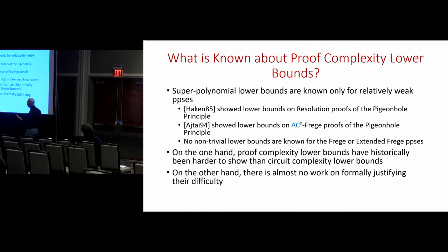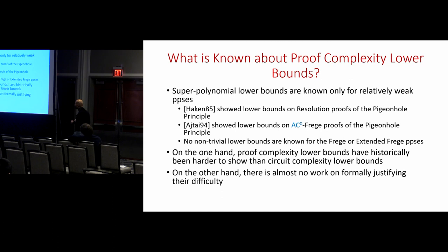There's a paper by Grochow and Pitassi where they look at an algebraic proof system and show that lower bounds for that system would imply lower bounds in algebraic complexity — so they tie the question of proof complexity lower bounds to certain kinds of circuit complexity lower bounds. But that's the most significant work I know in this direction, and we'll be doing something quite different here.